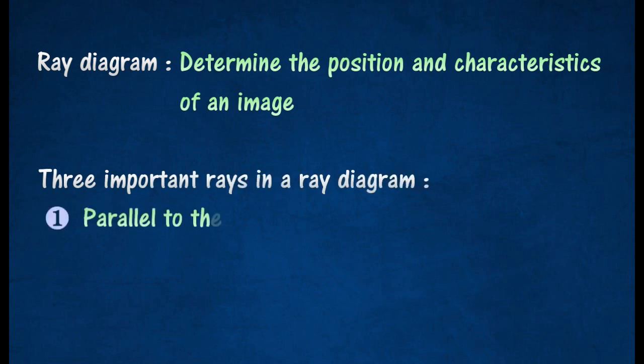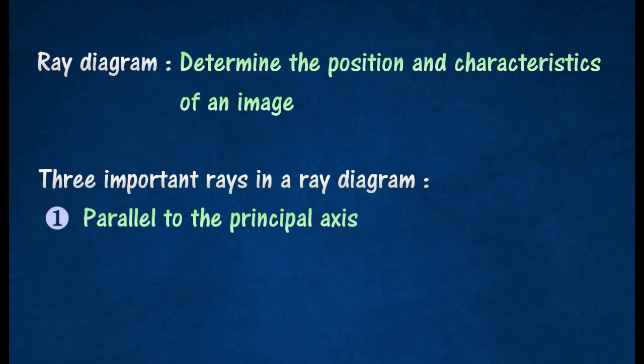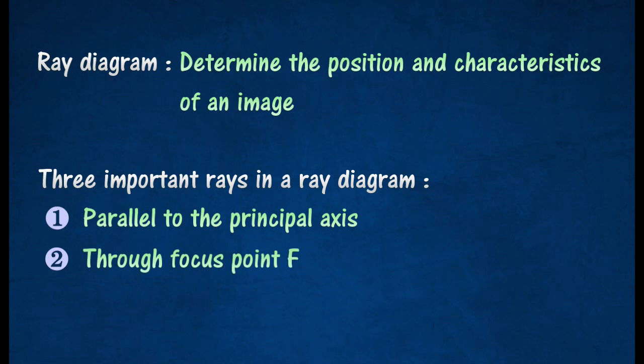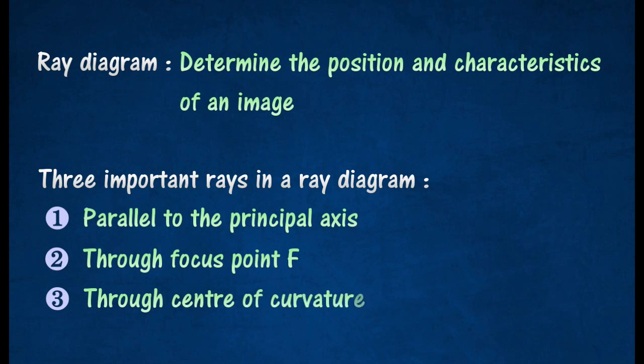A ray parallel to the principal axis is reflected to pass through focus point F. A ray through focus point F is reflected parallel to the principal axis. A ray through center of curvature C is reflected back along its own path.